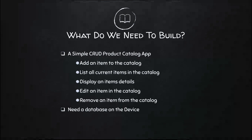We're going to have basic five functionality pieces: add an item, list all items in the catalog, display, edit, and remove items from the catalog. In this particular case, we're also going to need to build a database. The database we're going to use — as most mobile applications use — is going to be a SQL-like database.